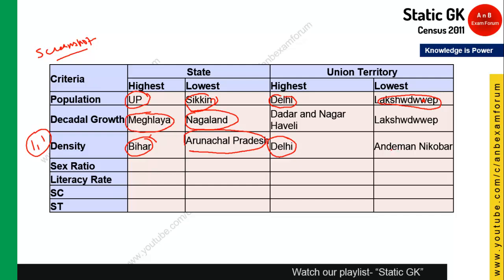For sex ratio — the number of females per thousand males — if people are educated, sex ratio tends to be higher; traditional cultures may see it decline. Kerala has the highest sex ratio and Haryana has the lowest sex ratio among states. You should also know the specific figures for Kerala and Haryana.